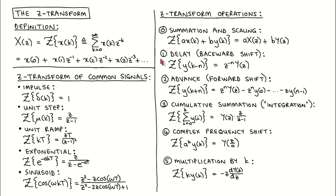Property 1 says that the Z-Transform of a signal delayed by N time steps is Z to the power minus N times the Z-Transform of the unshifted signal. Property 2 says that the Z-Transform of a signal advanced by N time steps is Z to the power N times the Z-Transform of the unshifted signal, minus Z to the power N times Y at 0, all the way down to minus Z times Y at N minus 1.